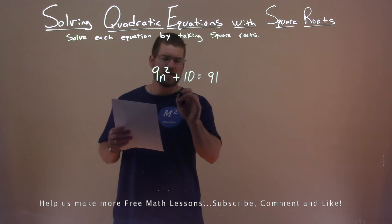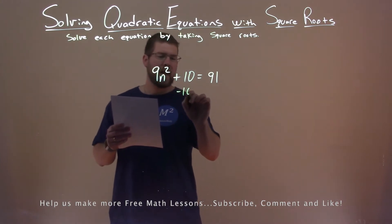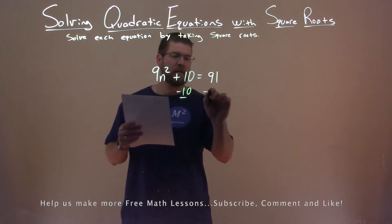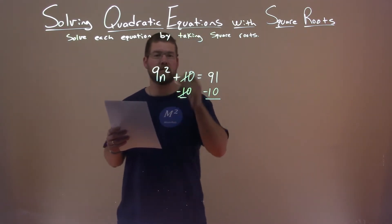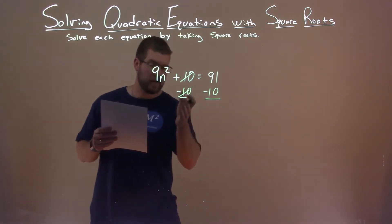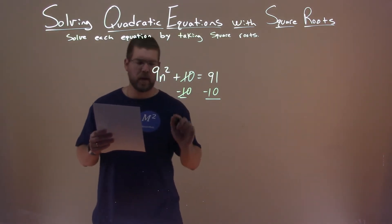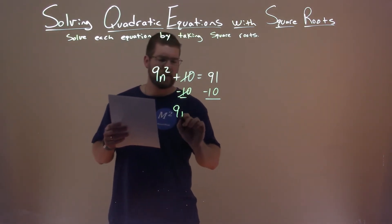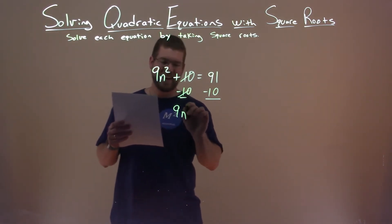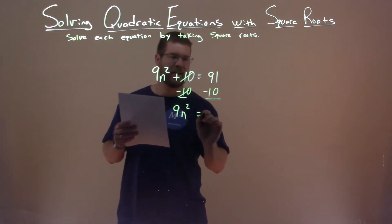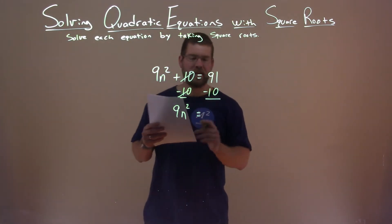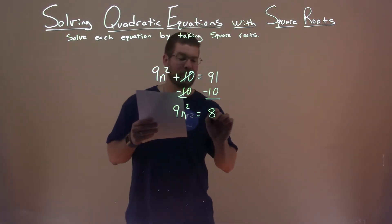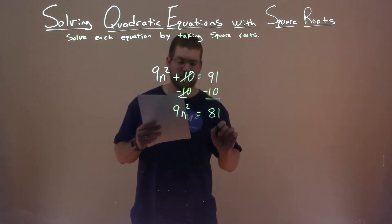First step, I need to subtract 10 from both sides. 10 and negative 10 cancel out. n squared just comes down and 91 minus 10 is 81.